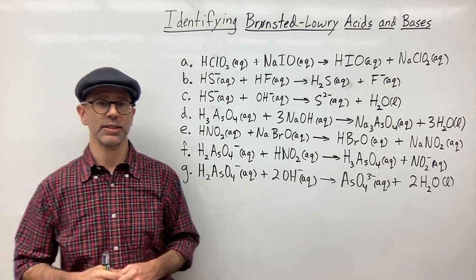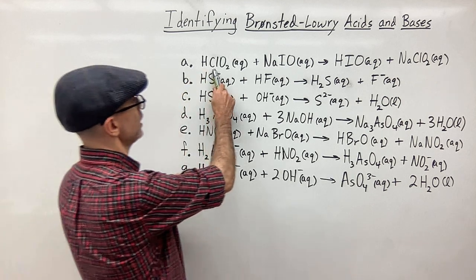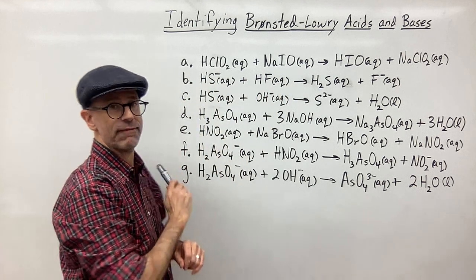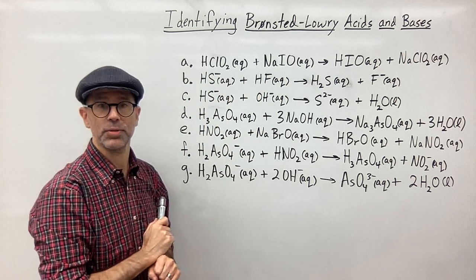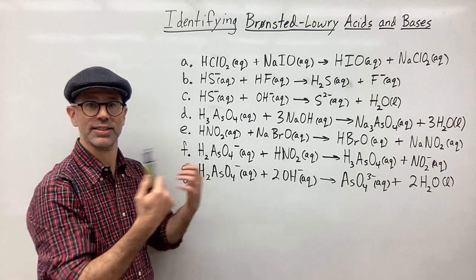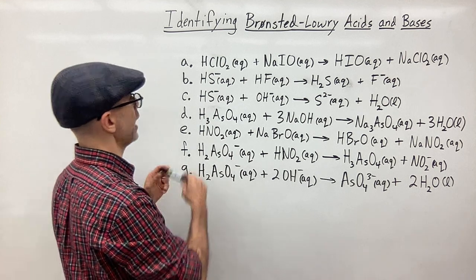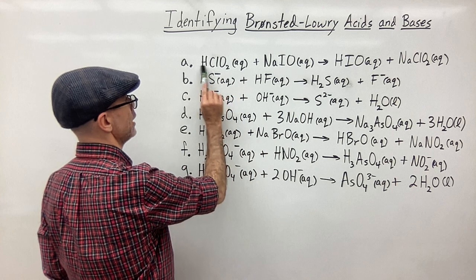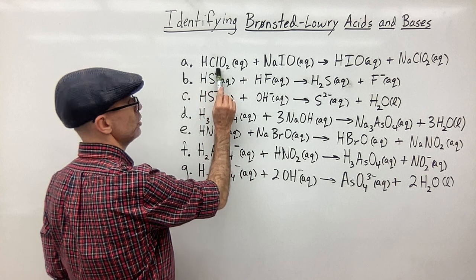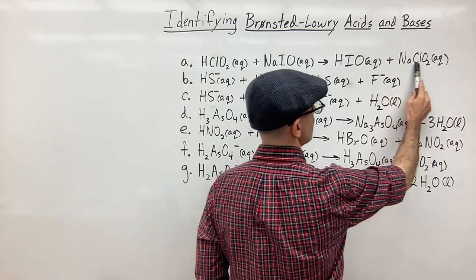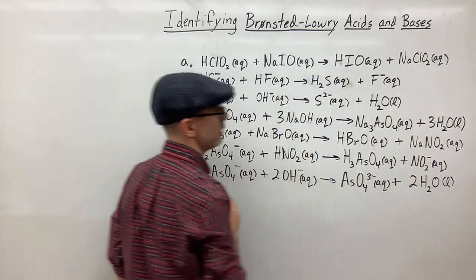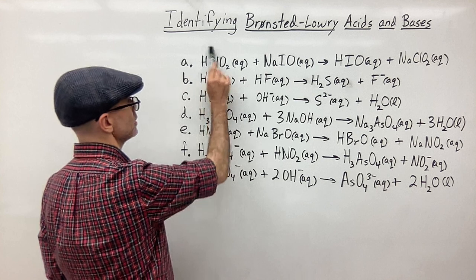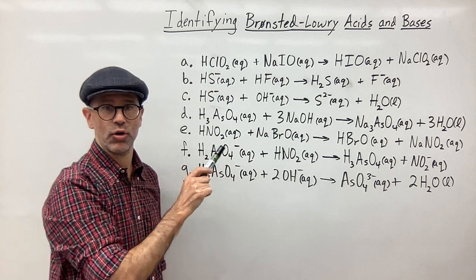For example A, we want to identify what is donating the proton or hydrogen and what is accepting the proton or hydrogen. So we have to look at the products too. We have HClO₂ here, and over here we have ClO₂⁻ coupled with a positive ion as a counter ion. So this lost the hydrogen — it donated the hydrogen.